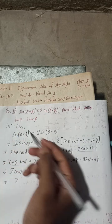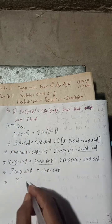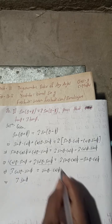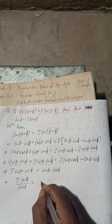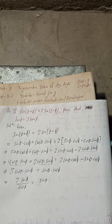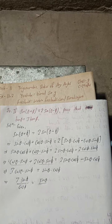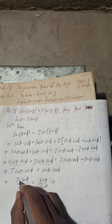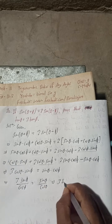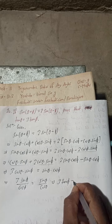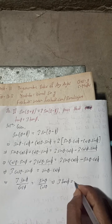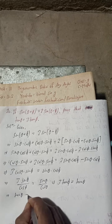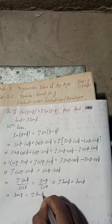Our target is to prove tan theta equals 3 tan phi. Dividing both sides appropriately, we get sine theta divided by cos theta equals 3 times sine phi divided by cos phi, which means tan theta equals 3 tan phi. This is proved.